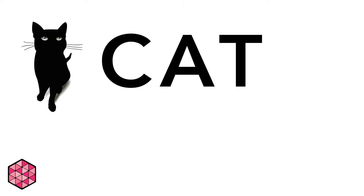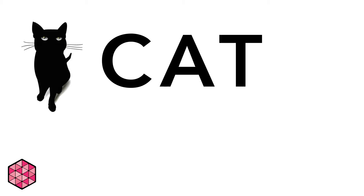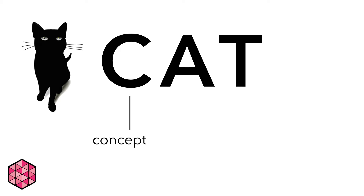In Design Lab, we use a critique approach to evaluating and giving feedback on media projects. We call it our CAT principles. The first part of our CAT principles is Concept — the main idea or argument that you are trying to convey through your design. No matter what kind of project you are working on, the most important thing is that your ideas are being articulated clearly and effectively.